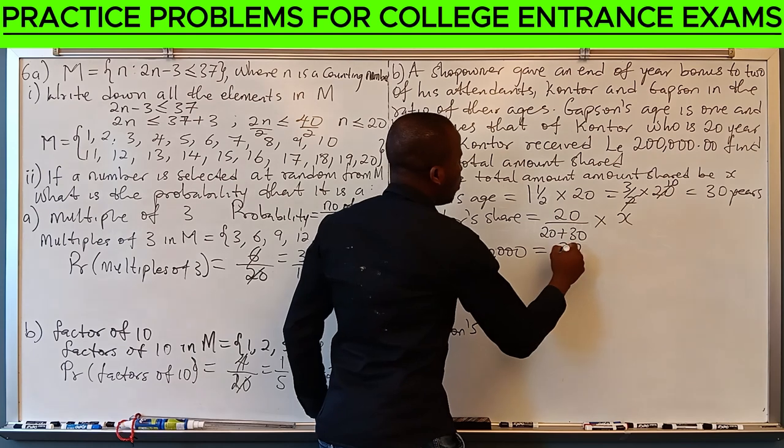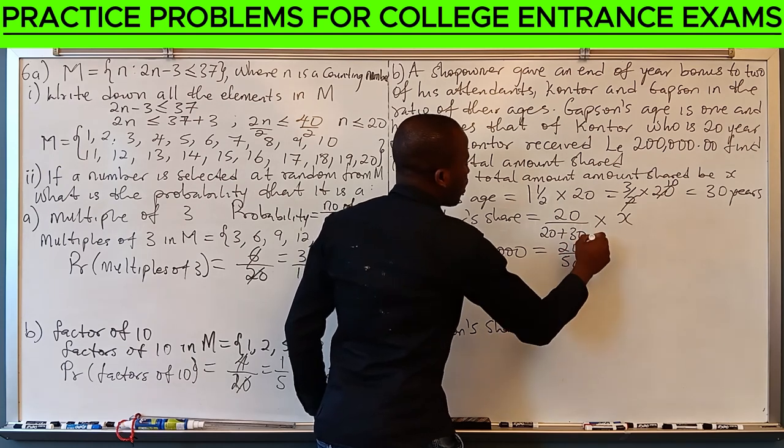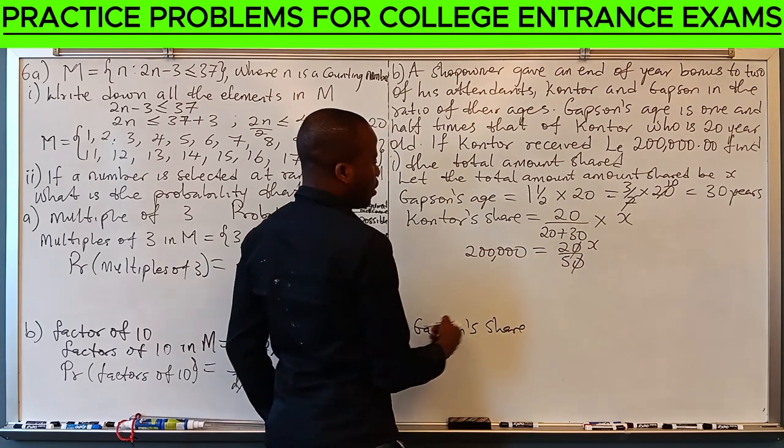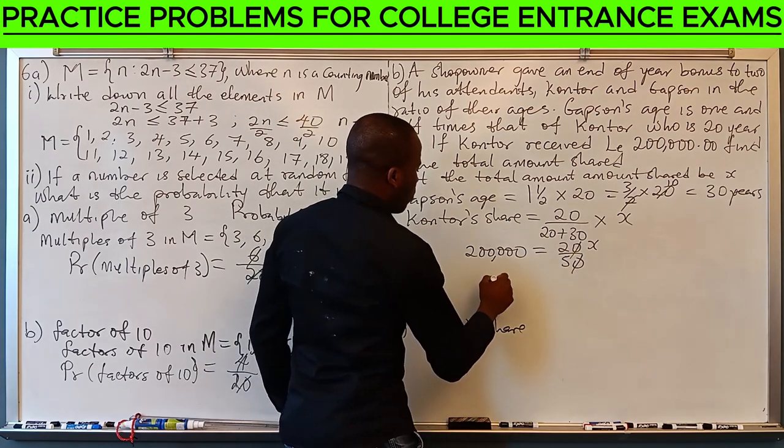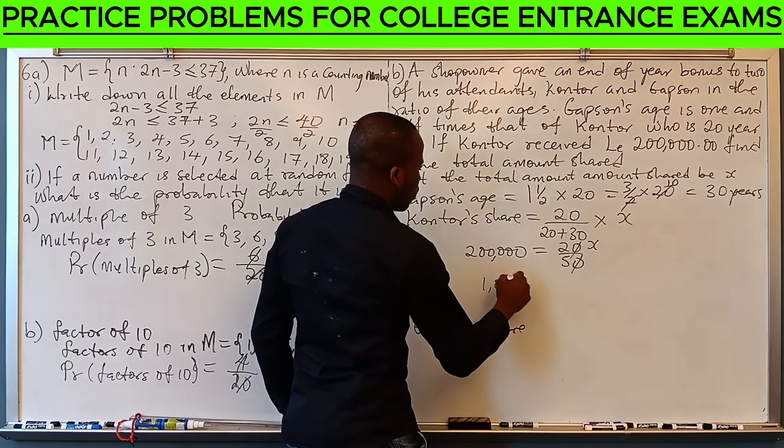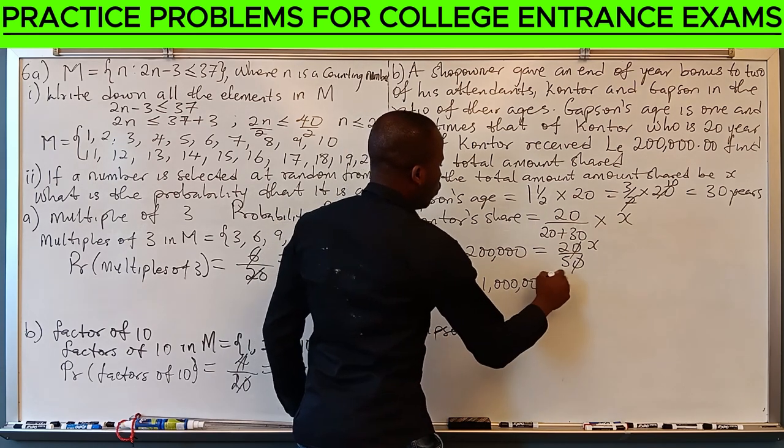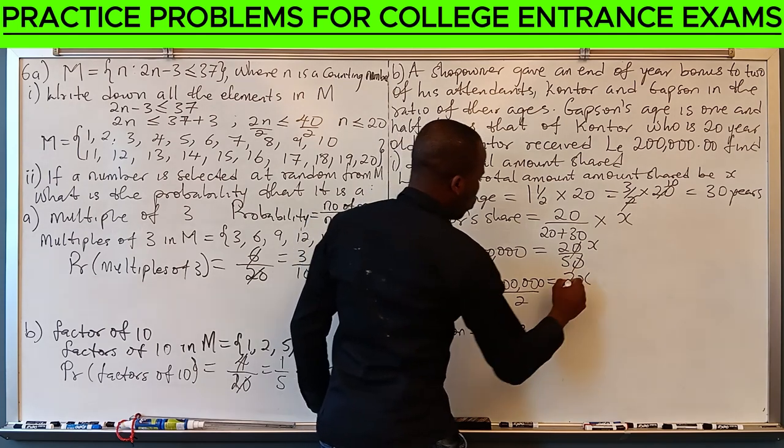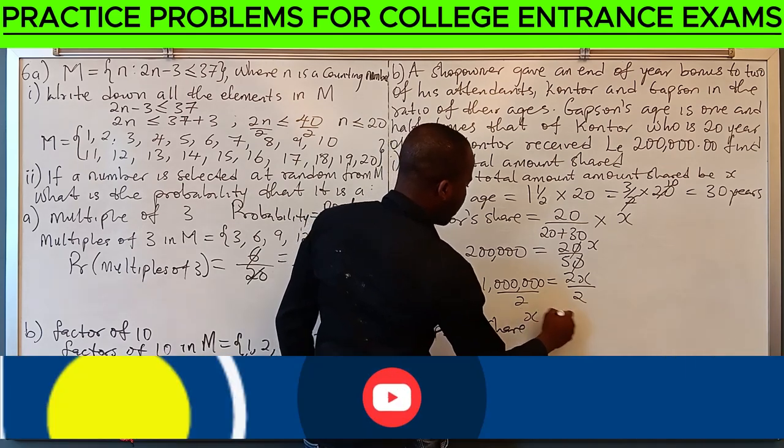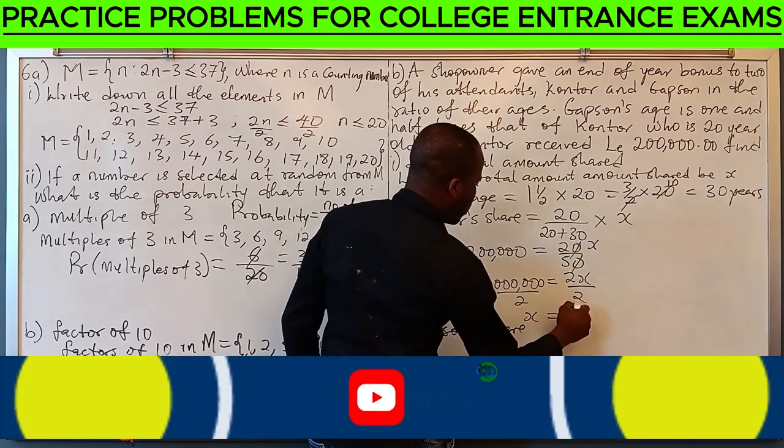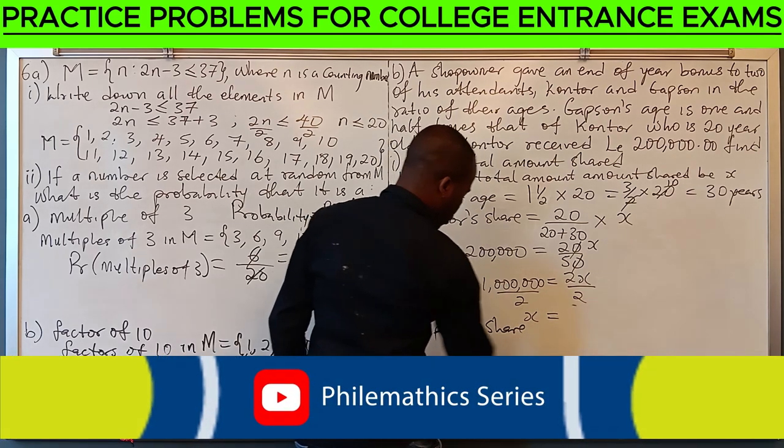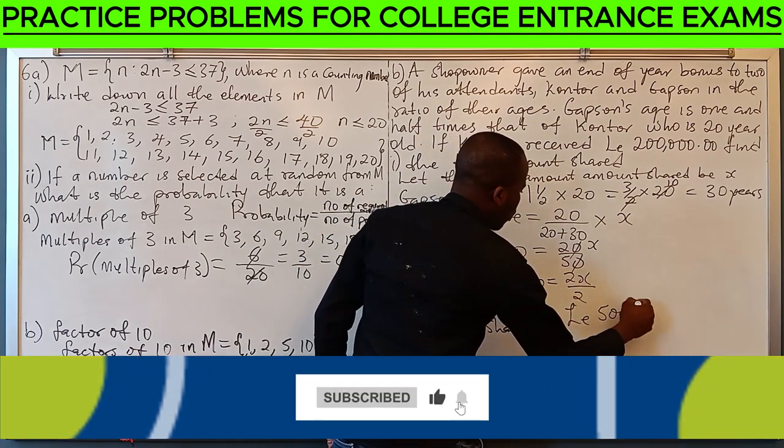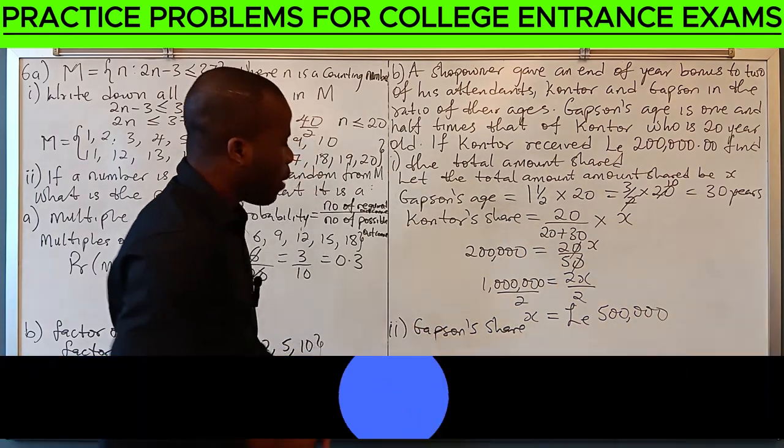This is 20 over 50 times X. So, we have 1,000,000 Egyptian pounds equals to 2X. So when we divide by 2, we have that X is 500,000 Egyptian pounds.